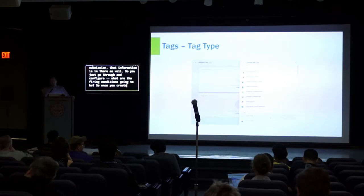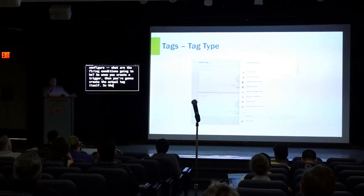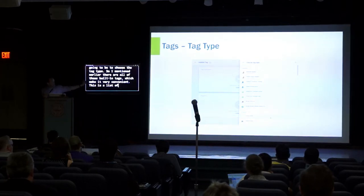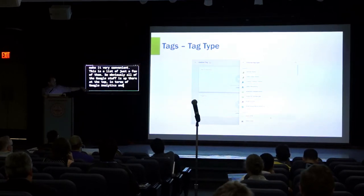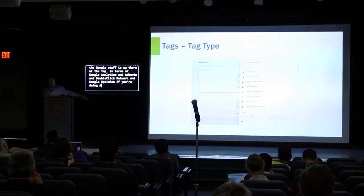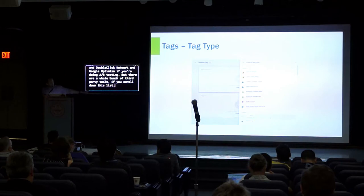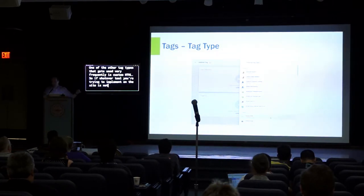Once you create a trigger, you're going to create the actual tag itself. The first thing when creating a tag is to choose the tag type. There are all of these built-in tags which make it very convenient. Obviously all the Google stuff is up at the top — Google Analytics, AdWords, DoubleClick Network, Google Optimize if you're doing A-B testing — but there are a whole bunch of other third-party tools as well, probably 30 or 40 of them if you scroll down the list.